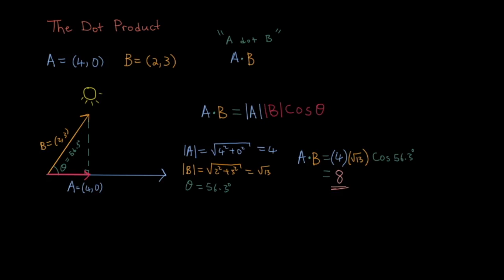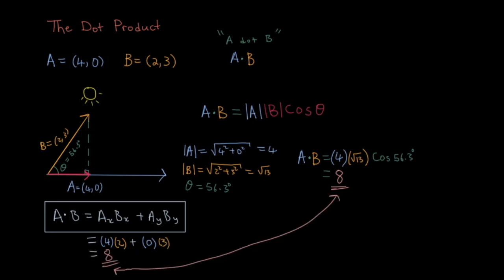Using our equation from earlier, that is, A dot B is equal to ax bx plus ay by gives us the following: 4 times 2 plus 0 times 3. And as you can see, our answer is also 8. We've multiplied two vectors together and gotten a scalar as an answer.